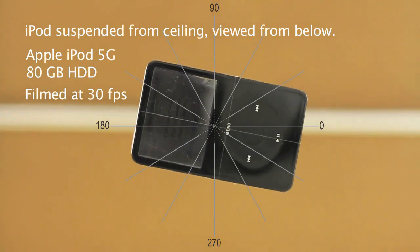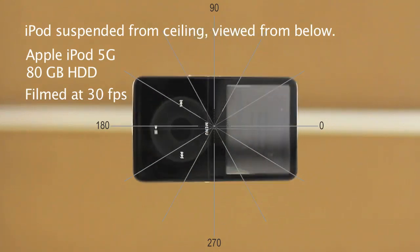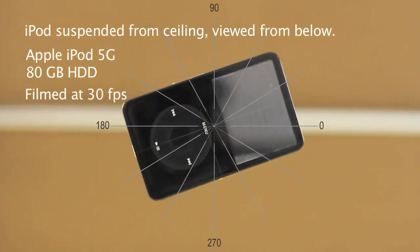An iPod, suspended from strings, begins to spin. Students use the conservation of angular momentum to figure out the mass of the spinning hard drive inside.